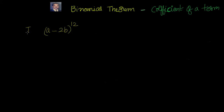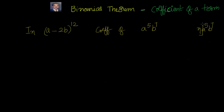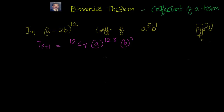In this expansion, we need to find the coefficient of a to the power of 5, b to the power of 7. This means when you expand, there will be a term where a to the power of 5 and b to the power of 7 are present — find the coefficient in front of that. So writing the generic term: T of r plus 1 equals 12Cr, a to the power of 12 minus r, into b to the power of r. Note that b here is actually minus 2b, so the term includes minus 2 to the power of r as well.